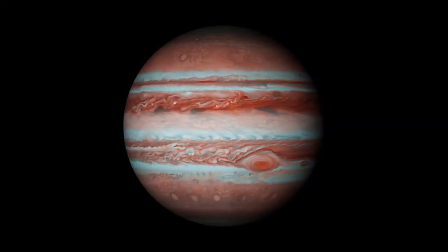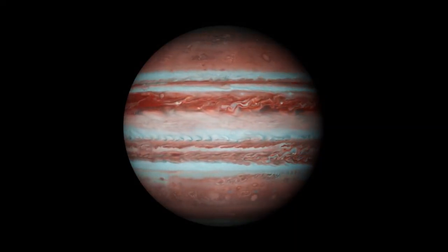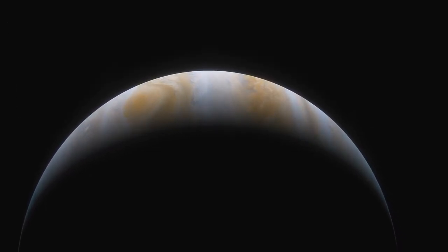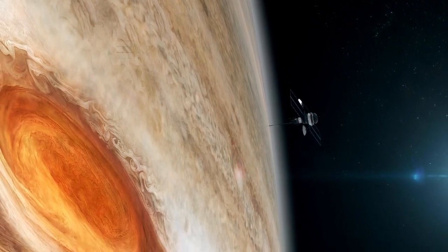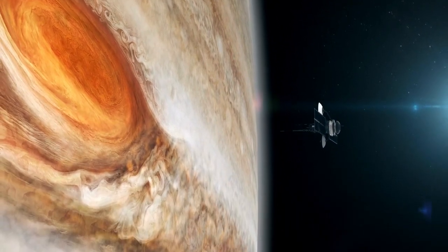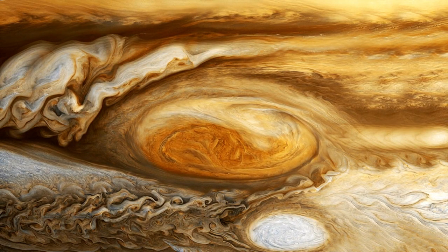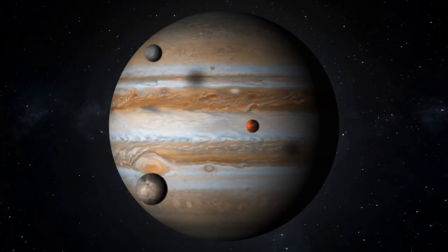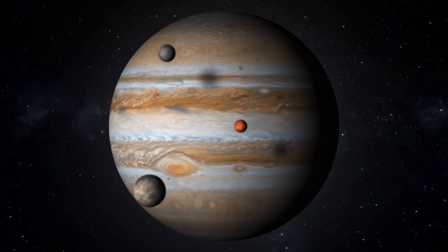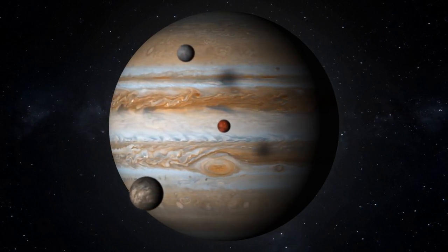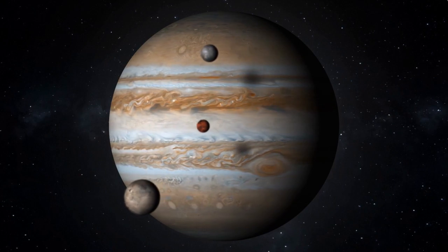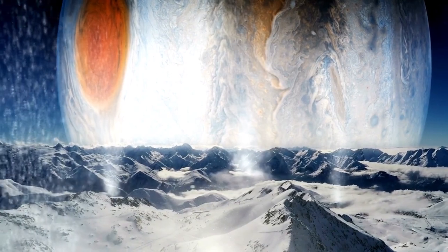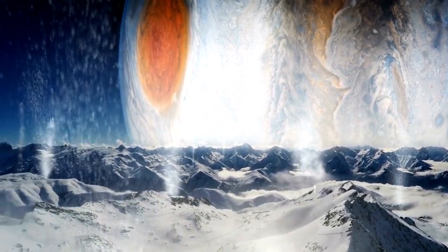Jupiter is the largest planet in our solar system, with a diameter more than 10 times that of Earth. It is a gas giant and is known for its iconic Great Red Spot, a giant storm that has been raging for centuries. Jupiter is also home to some of the most interesting moons in the solar system, including Io, Europa, Ganymede and Callisto, which are believed to have subsurface oceans of liquid water and may be capable of supporting life.